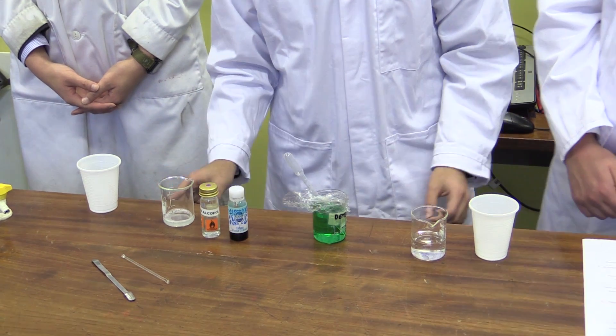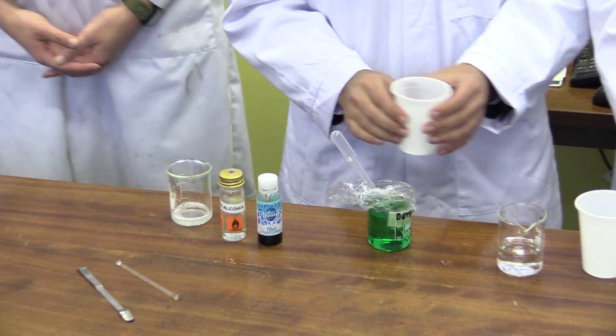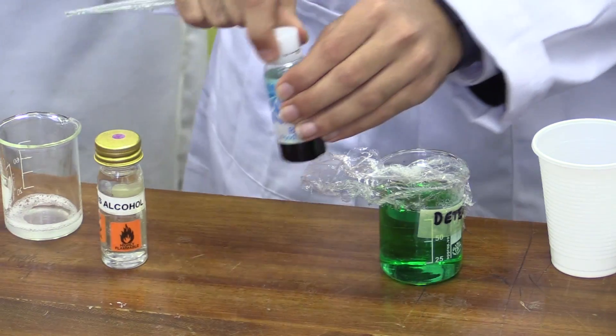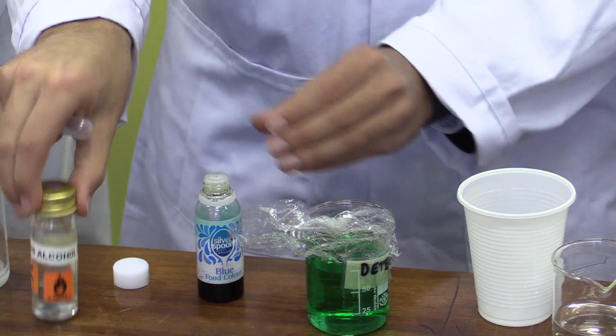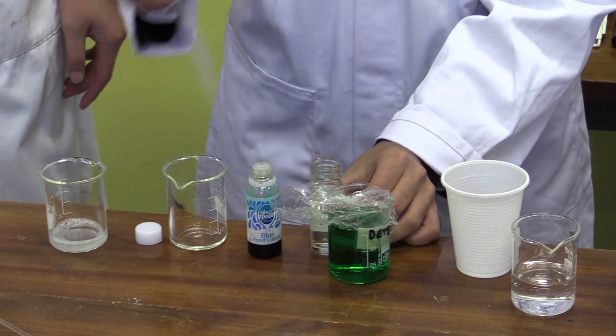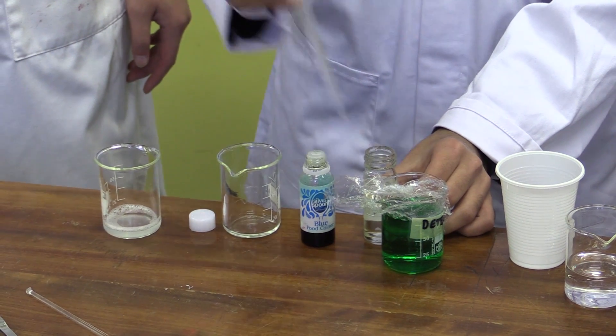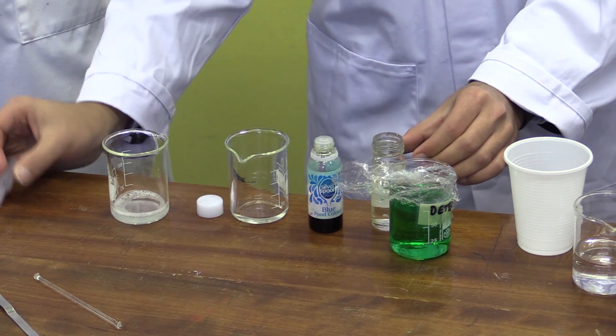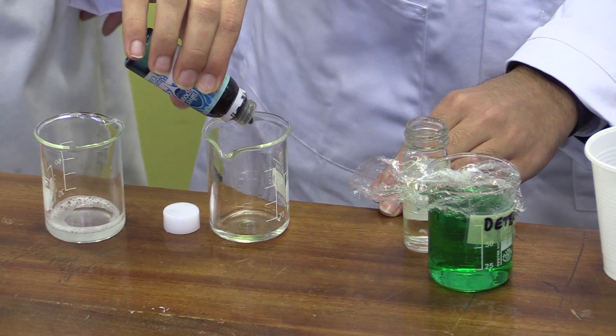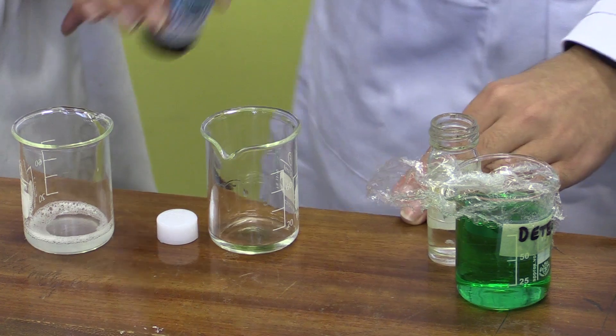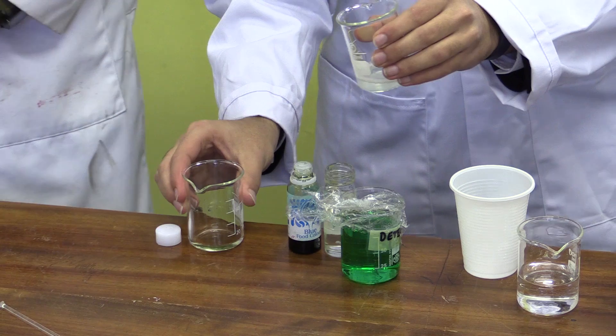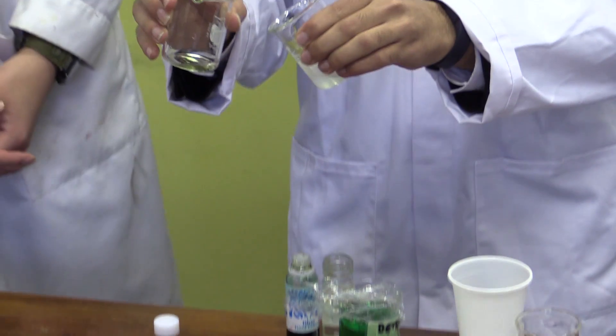In a separate cup, we will mix isopropyl alcohol with three drops of food coloring. Now, this is probably the most important step. The alcohol mixture has to be poured at an angle of 45 degrees.